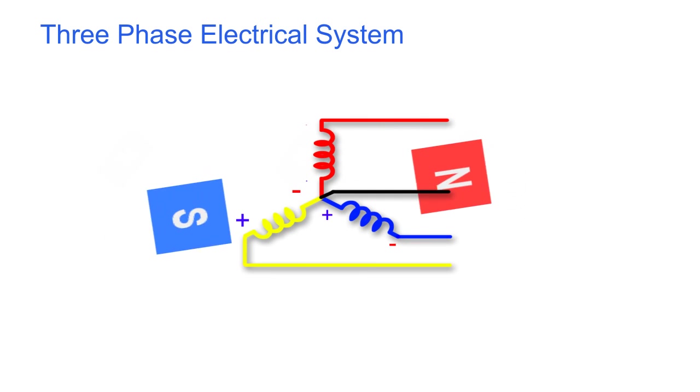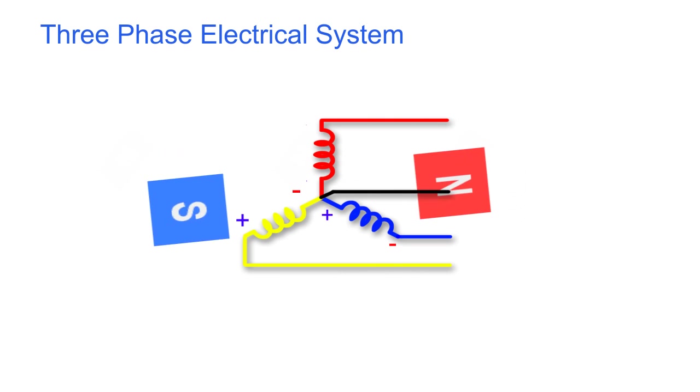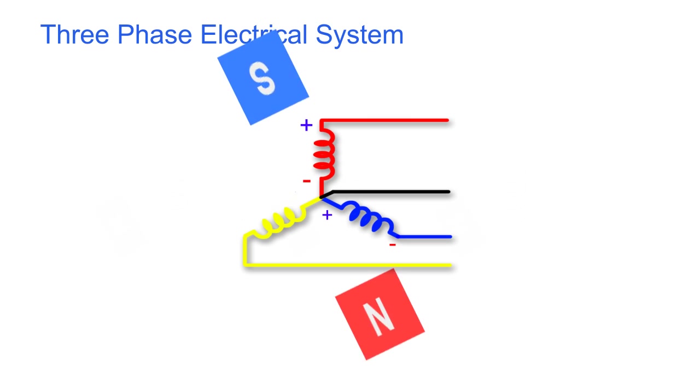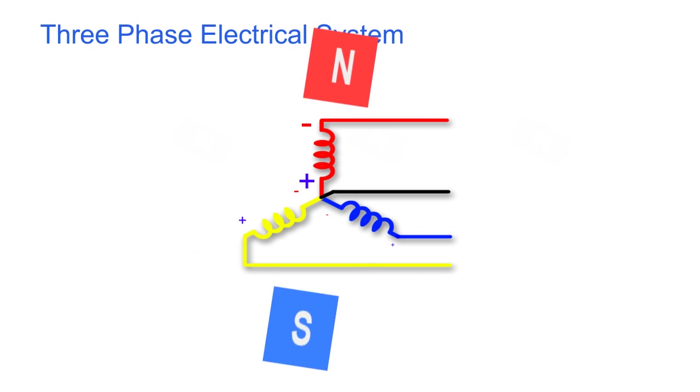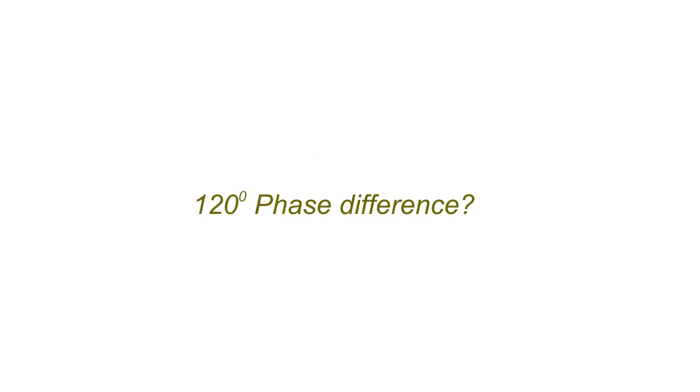Consequently, alternating EMF is generated in each coil and the EMF of each coil is displaced in phase angle 120 degrees from one another. Let's understand what the 120 degree phase difference means.